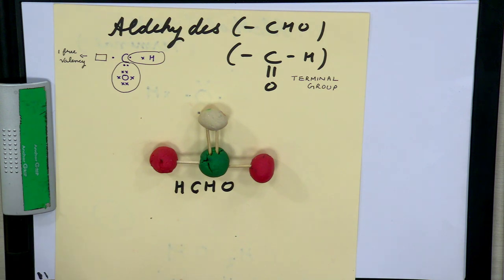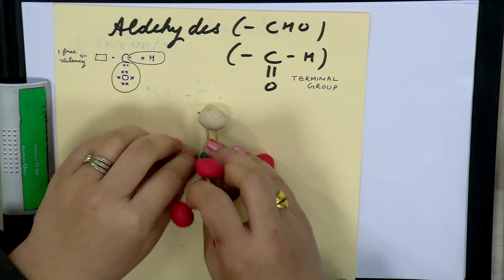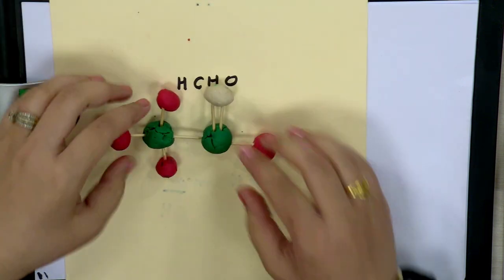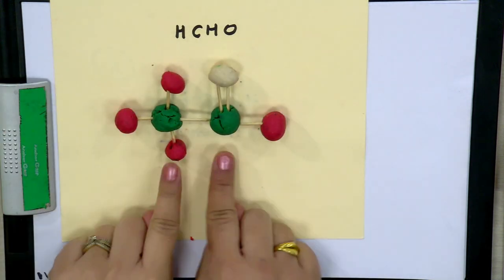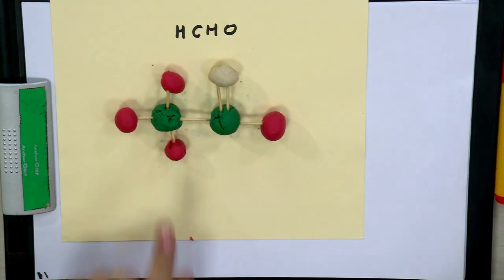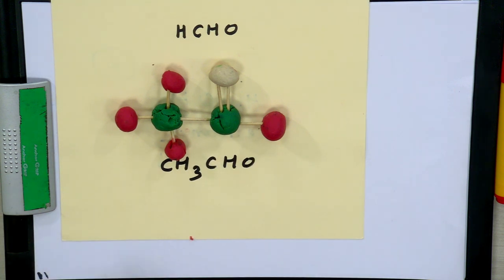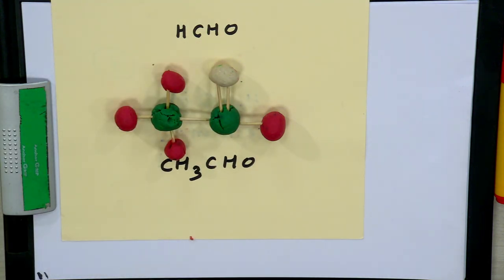To draw the second member of the series, recall from session 4 that in a homologous series the difference is a CH₂ unit. So if we add one CH₂ unit to the first member, we get the second member. The molecular formula becomes CH₃CHO, and when you count the number of bonds it is seven. This way you can form different members of the same group.